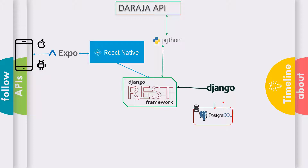We're also going to use Firebase, which is Google's cloud messaging platform. This will enable us to send push notifications whenever a payment is made. We'll also take advantage of OTA updates through Expo — this means we can update our mobile apps without ever requiring users to upgrade through the app store. We push code changes and consumers receive updates automatically, which is really a cool process.